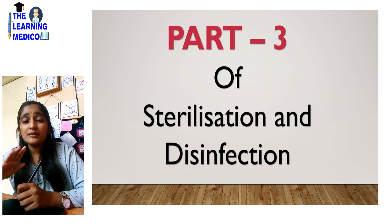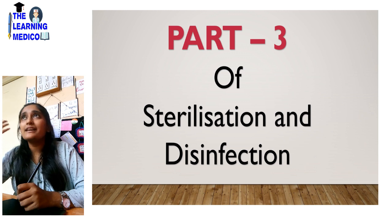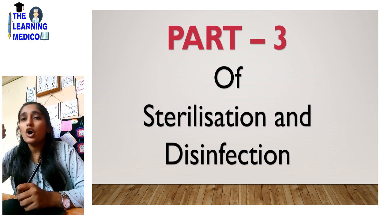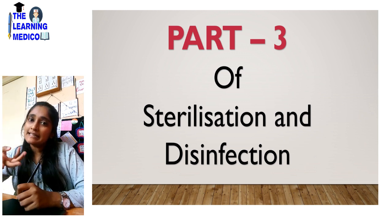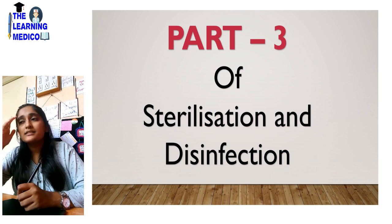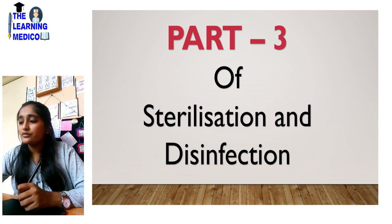In Part 1, we have seen what is sterilization, what are the methods, and physical agents. This is Part 3. We will see Autoclave. We have already seen hot air oven.